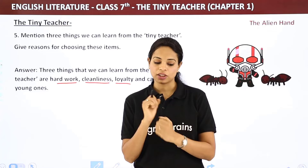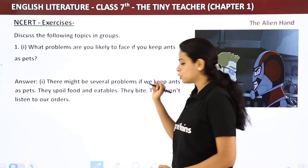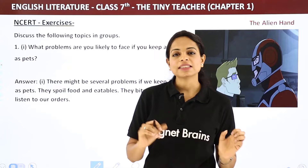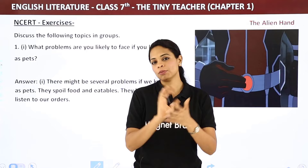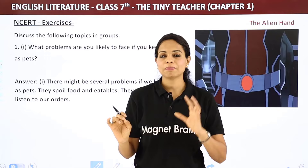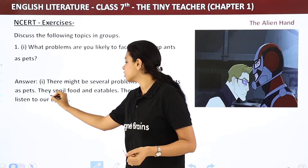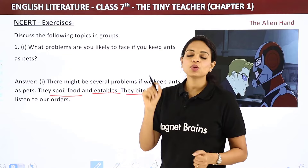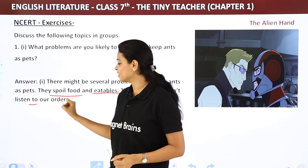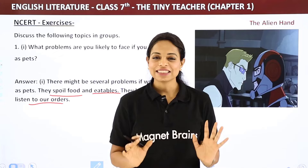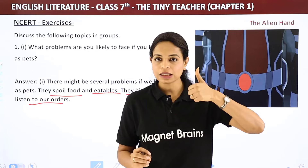Discussion topics: What problems are you likely to face if you keep ants as pets? The problems would be: first, they will harm and spoil our food and eatables; second, they will bite us — red ant bites are very bad; third, they won't listen to our orders. That is why it is not advisable to keep ants as pets.